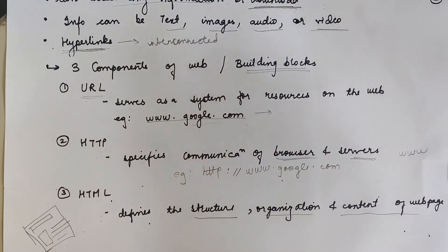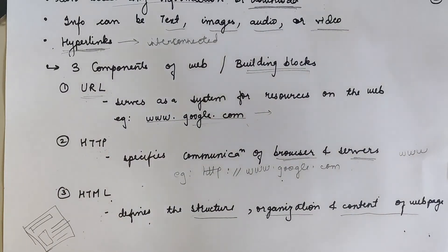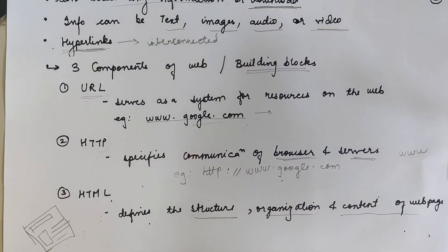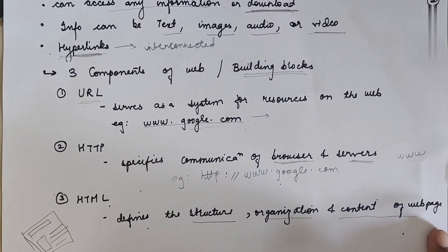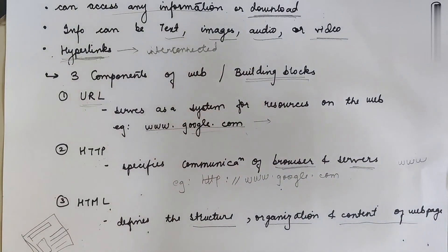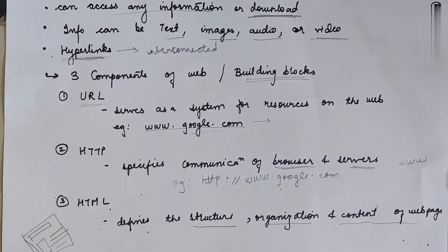In simple words, the worldwide web is a kind of information sharing all over the world over the internet. Whatever information you want to find out, you can find it using this. I hope you liked my video. If you did, please like, share, and subscribe.